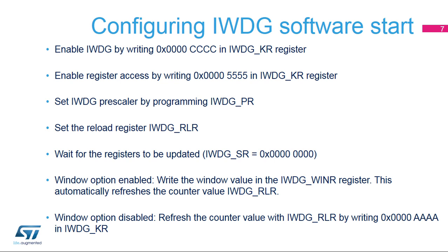After accessing the previous registers, it is necessary to wait for the IWDG SR bits to be reset in order to confirm that the registers have been updated. Two options are now available: enable or disable the IWDG window option. To enable the window option, write the window value in the IWDG WinR register. Otherwise, refresh the counter by writing 0x0000AAAA in the key register to disable the window option.